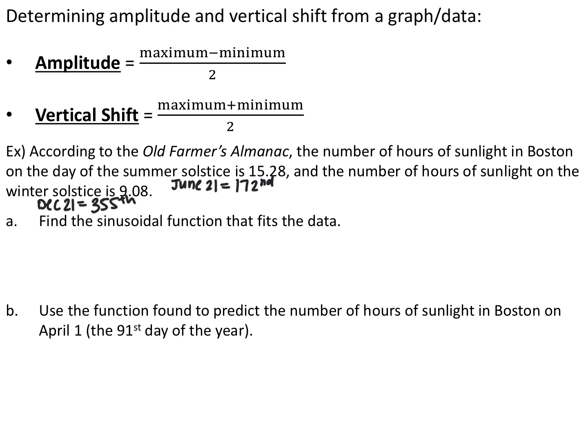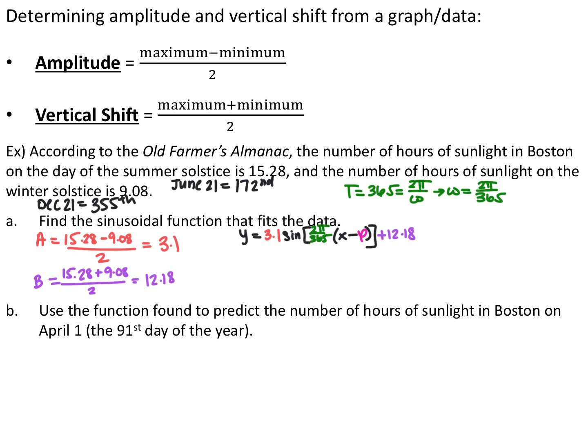According to the Old Farmer's Almanac, Boston has 15.28 hours of sunlight on the summer solstice (June 21st, day 172) and 9.08 hours on the winter solstice (December 21st, day 355). The amplitude is (15.28 - 9.08)/2 = 3.1. The vertical shift is (15.28 + 9.08)/2 = 12.18. The period is 365 days (one year), so ω = 2π/365.